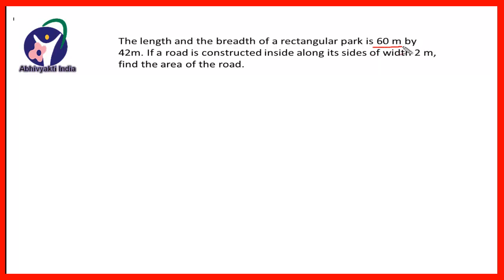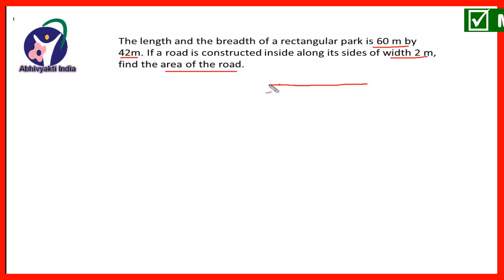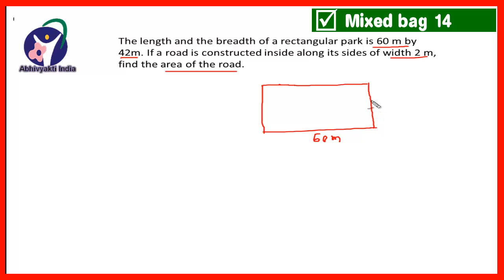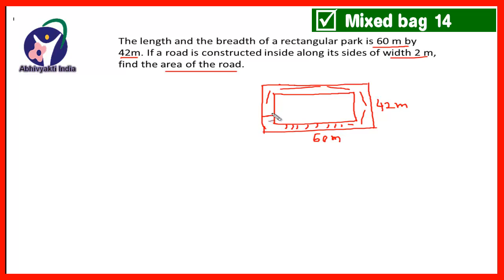The length and the breadth of the rectangular park is 60 meter by 42 meter. If the road is constructed inside along its sides of width 2 meter, find the area of the road. Around the rectangular park, whose length is 60 meter and breadth is 42 meter, a road is constructed inside — not outside, inside — of width 2 meter. Find the area of this road.